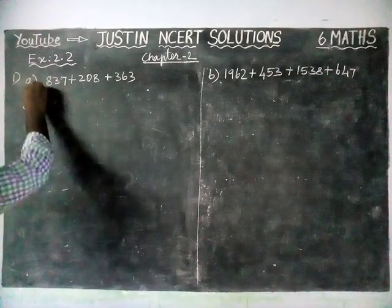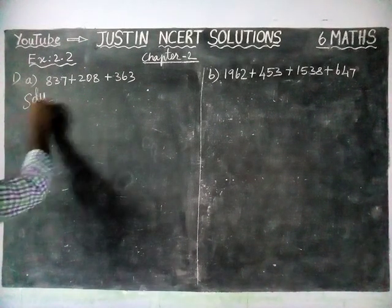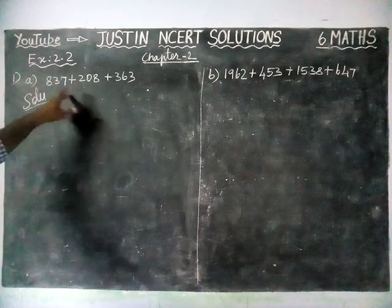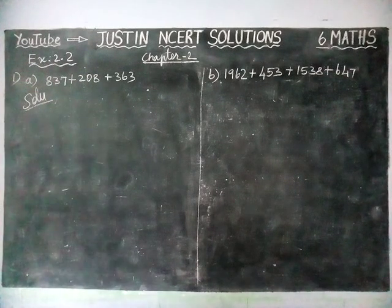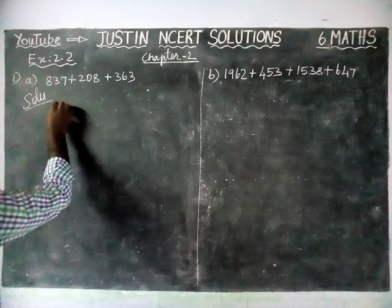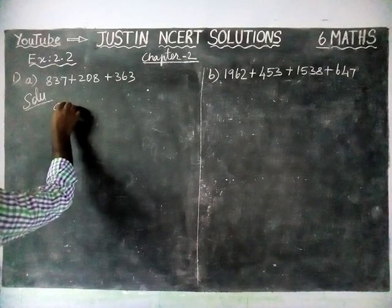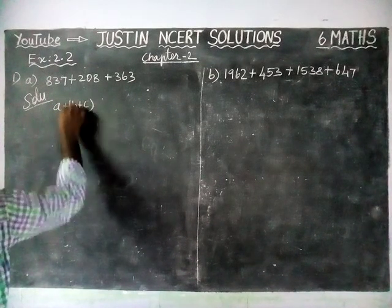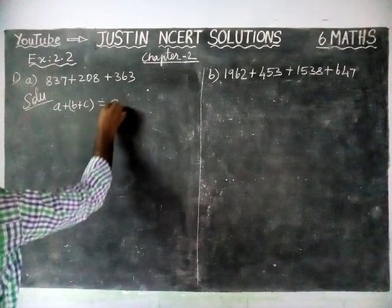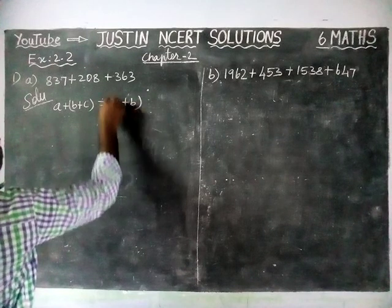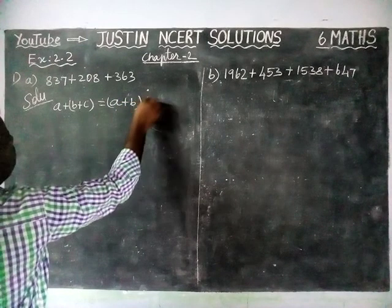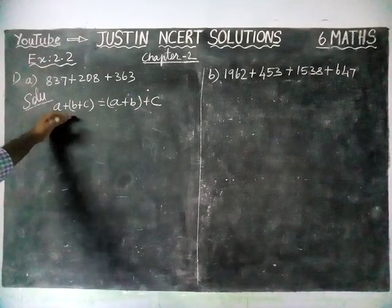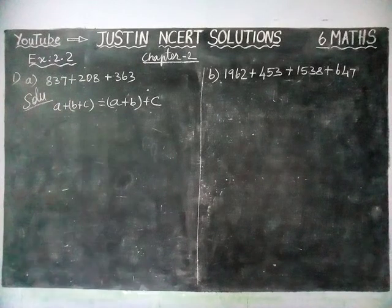We can use associative property here. By using associative property we can change it. The property states: a plus b plus c is equal to a plus (b plus c). So by using this associative property we are going to interchange the place.